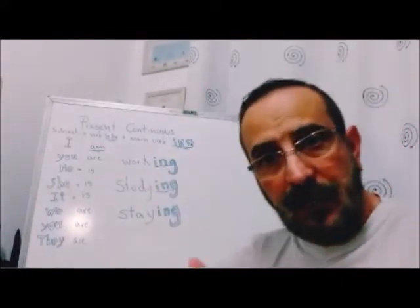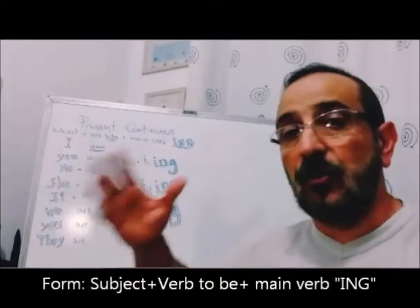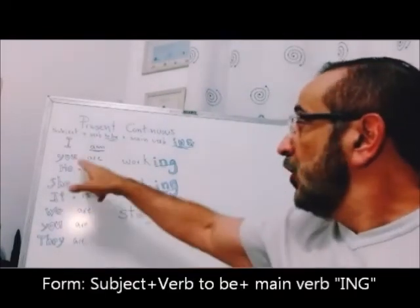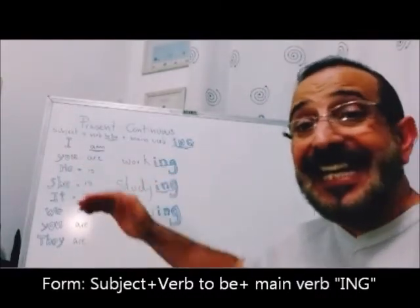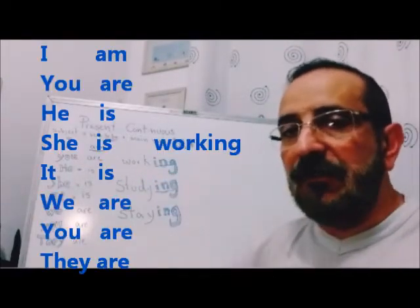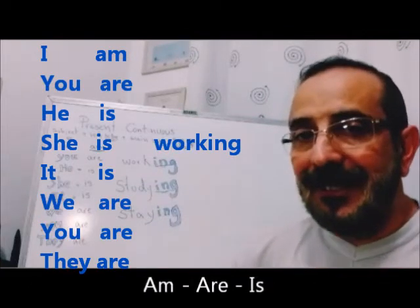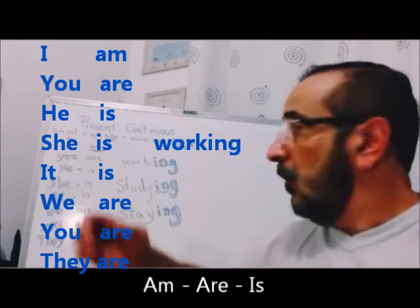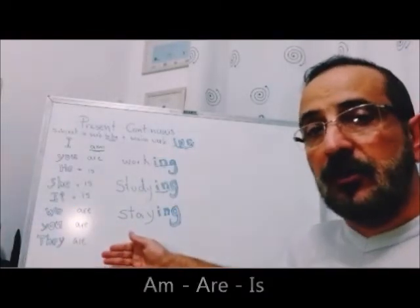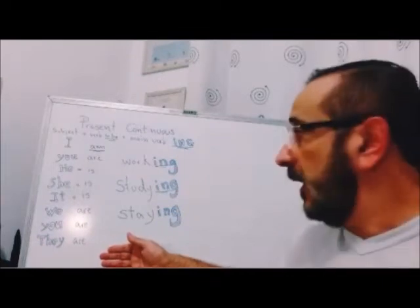So, I am working at the moment now — eu estou trabalhando agora, nesse momento. You are working. He is working. Quem realmente vai fazer a conjugação desse verbo é o verbo to be: am, are, is. O 'working' aqui vai ser igual em todas as pessoas. There is no change — não vai haver mudança.